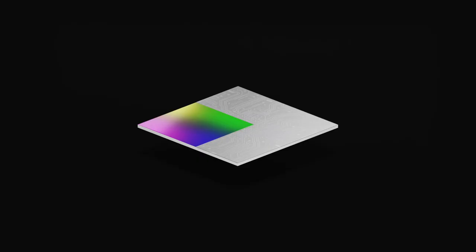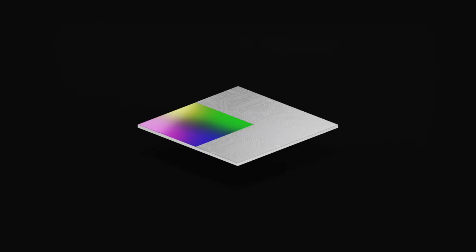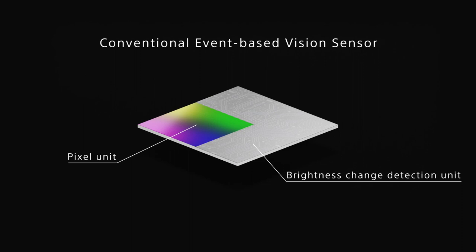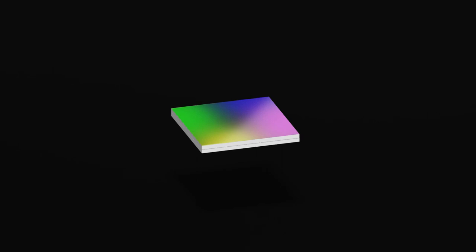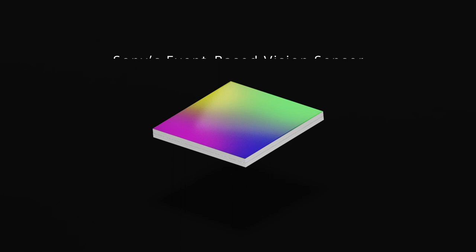Let's look at the pixel that outputs the event with Sony's event-based vision sensor. Pixel unit that receives light and brightness change detection unit are connected via copper pads and directly stacked top to bottom. This is Sony's copper-copper connection technology that makes it possible to increase the aperture ratio without any loss.